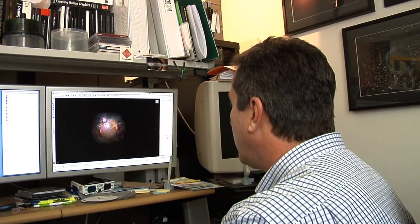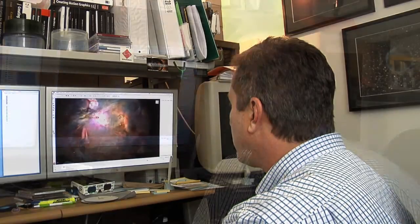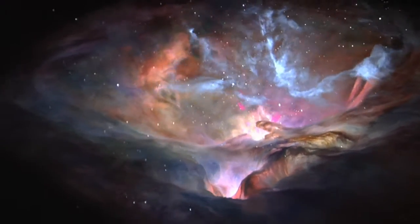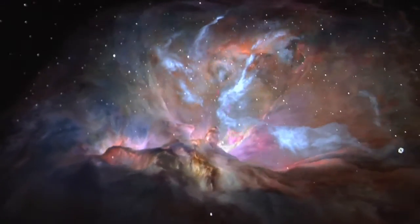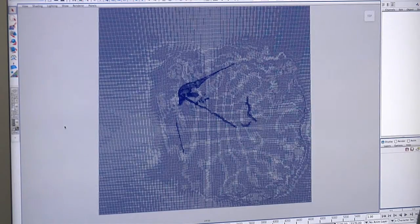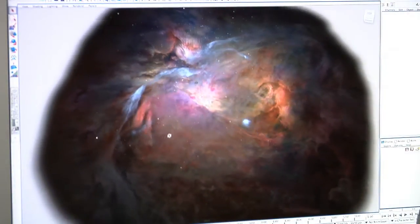My role in the IMAX 3D movie was to build a 3D model of the Orion Nebula. Hubble only takes 2D pictures, so we actually had to carve what we thought it would look like, reshaping the geometry from a flat grid into three dimensions.